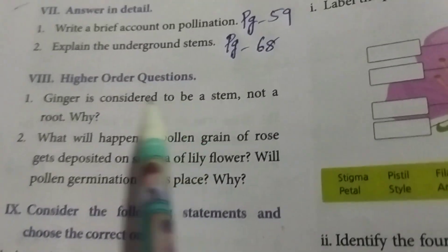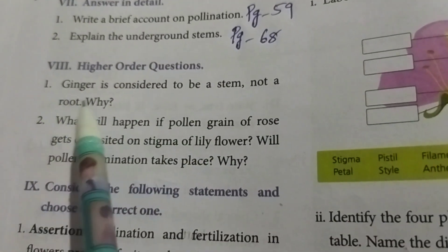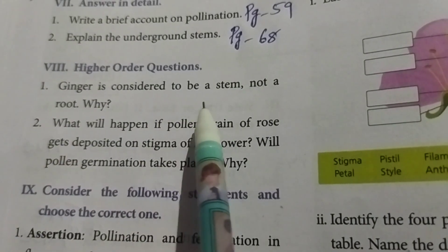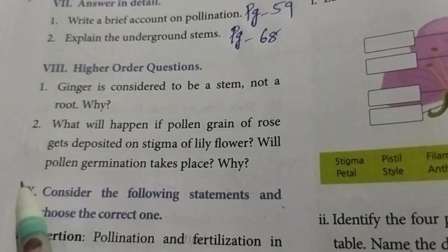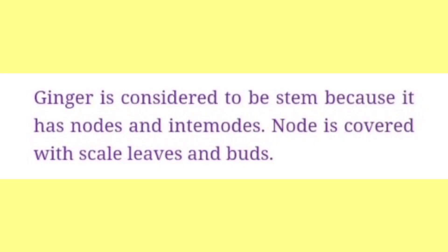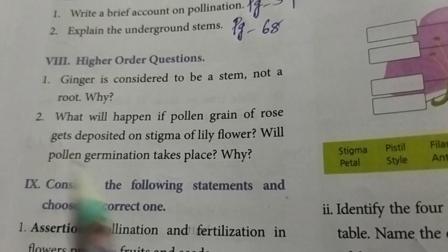Roman numeral VIII: Higher order questions. First one: Ginger is considered to be a stem, not a root. Why? Answer: Ginger is considered to be a stem because it has nodes and internodes. The node is covered with scale leaves and buds.